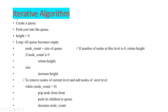Now we will see how to find the height without using recursion — the iterative version. For this we use BFS traversal, or level-by-level traversal. Since we are using BFS logic, we need a queue. We create a queue and insert the root into it. We initialize height to 0 and, while the queue is not empty, we count the number of nodes at each level. Whenever the node count reaches 0, we return the current height.